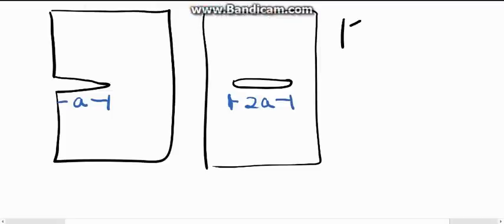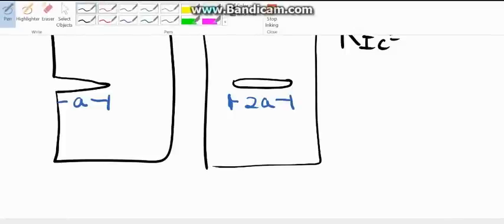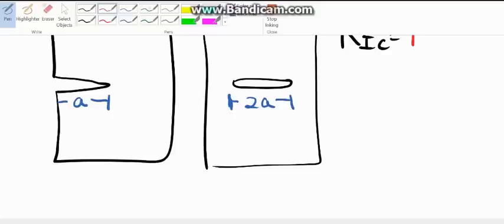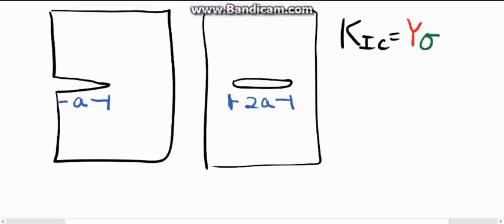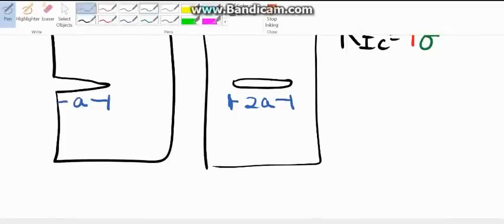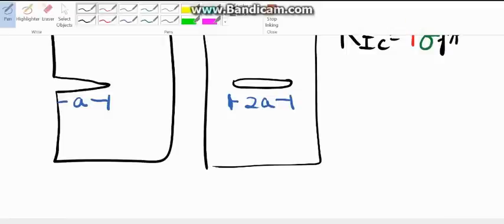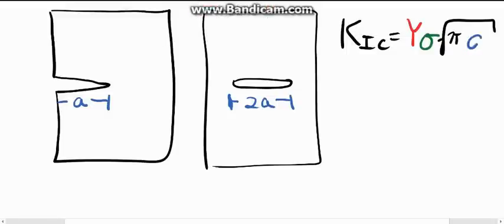Our K1C value, or fracture toughness, is equal to Y times sigma, where sigma is the stress applied to the material on the outside, times the square root of pi times A. Now, again, A is the crack length.